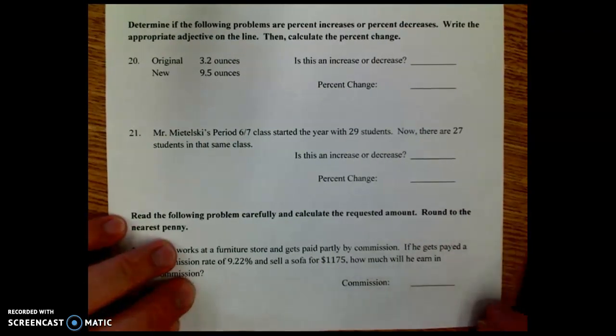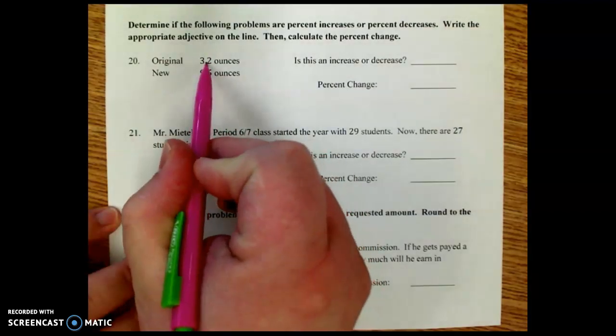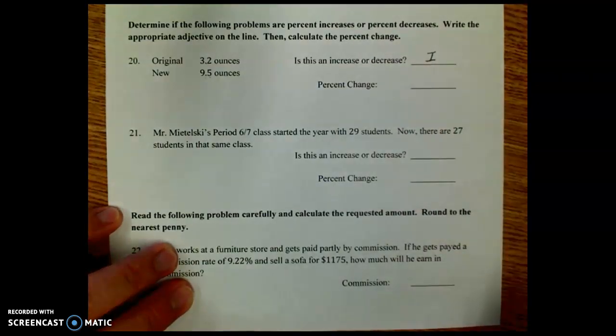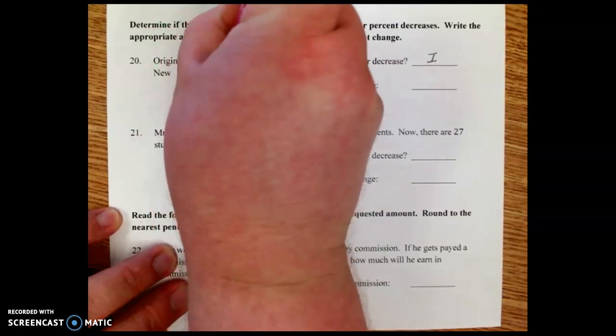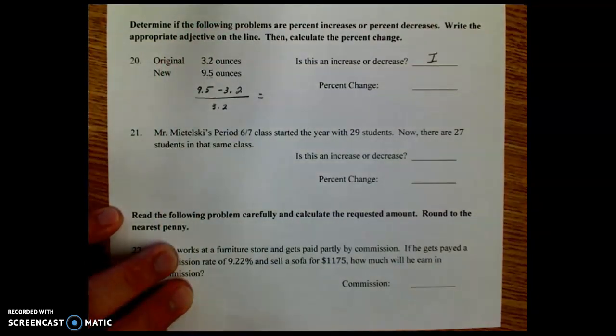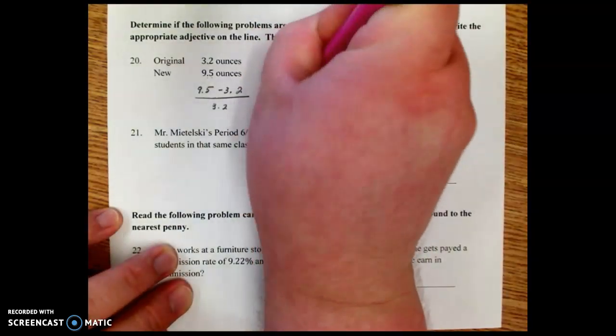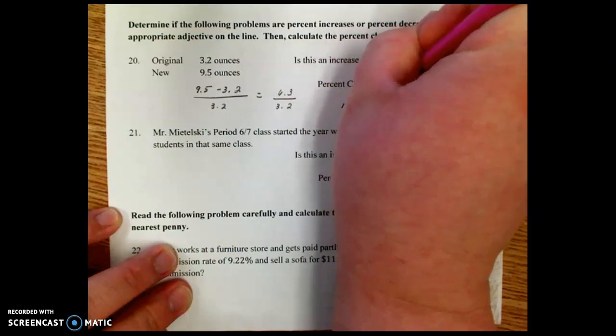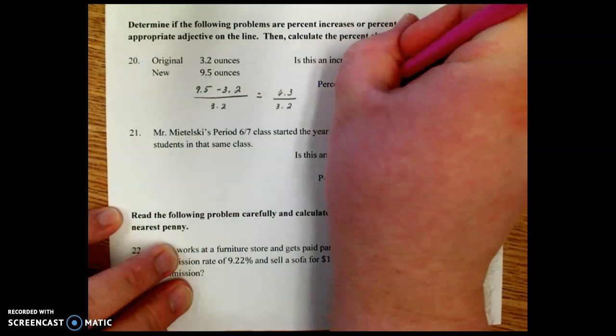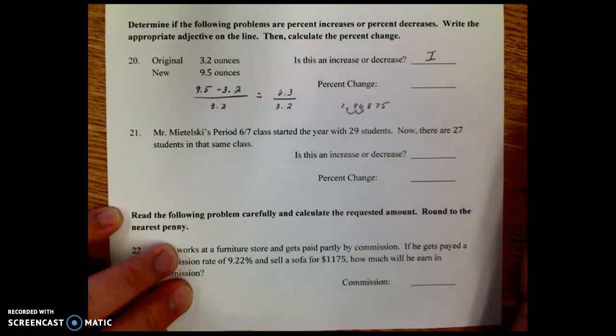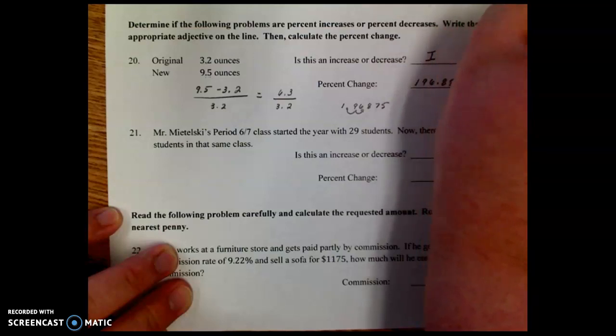Moving on, it says, determine if the following problems are percent increases or percent decreases. Write the appropriate adjective on the line, then calculate the percent change. Look at the original to new. Do you see how it goes up? So therefore, it's an increase. And in order to do this, we do the big minus the small divided by the original. So 9.5 minus 3.2 is 6.3. We divide that by 3.2. We get 1.96875. We round it, or we move it over two places. That'd be 196.88% increase.